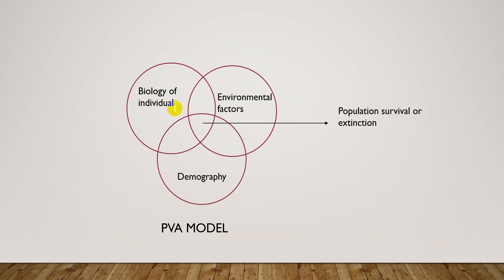Here is a PVA model. It takes into account the biology of the individual, environmental factors, and demographics. By finding all these things, the population survival or extinction rate — whether this population will survive or go extinct — can be identified.